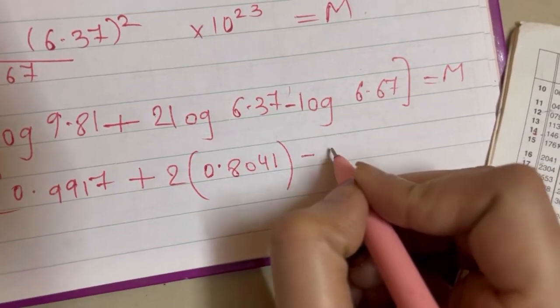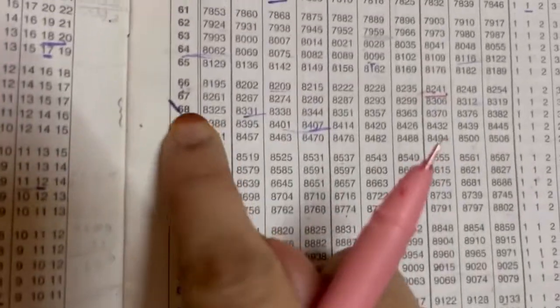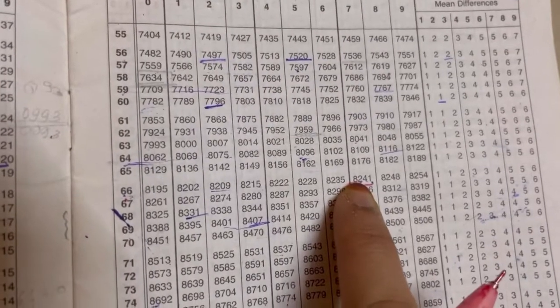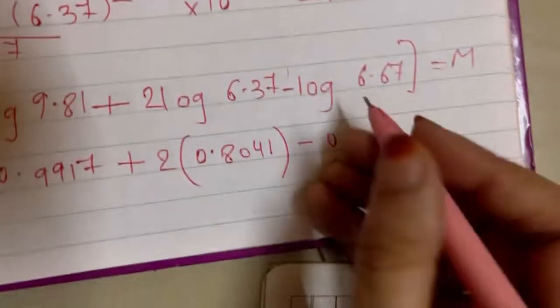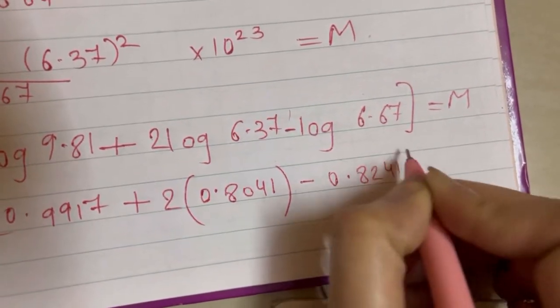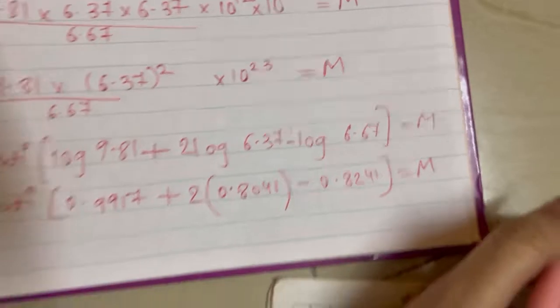Just one digit before point, so 0 point. 66 ka 7, 66 ka 7, look for 66 ka 7, that is 8241, that is equal to your M.